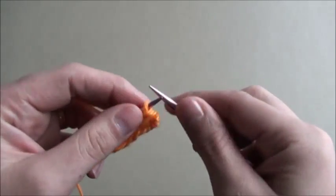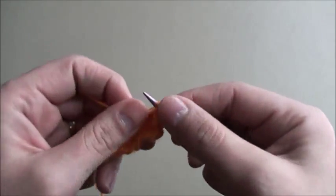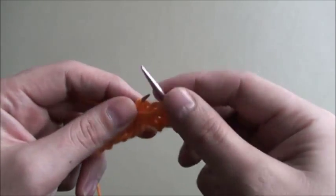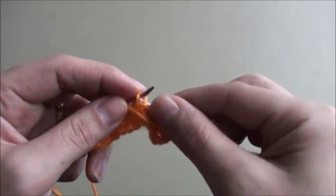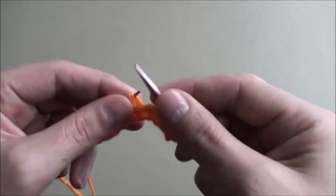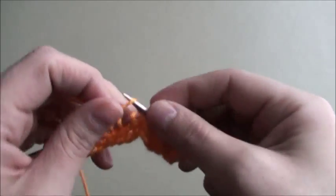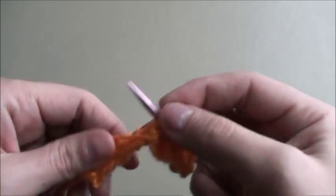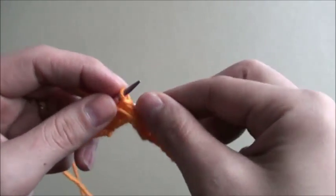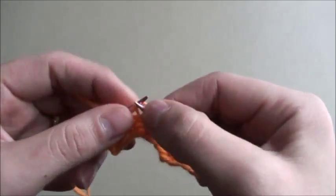For row 4, we will purl 2 then slip 2, purl 2, slip 2. We will purl 2 then slip 2 throughout this row.